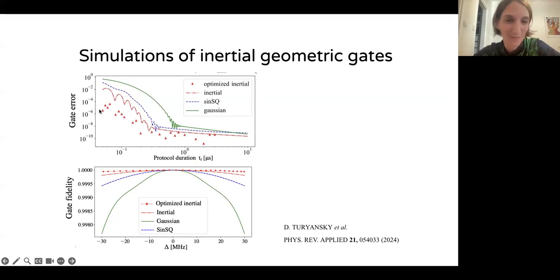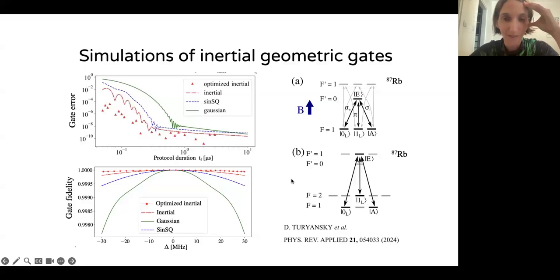I'll just show the results. What you see here in this upper plot is that we can achieve a lower gate error for the same protocol duration. Our inertial protocol is this red curve and we compare it to some standard adiabatic pulses. Then we can further improve this result with optimal control. What we see in the lower plot is that our results are also robust. We perturb the laser frequencies from atomic resonance and we check by how much the fidelity, the gate fidelity degrades. We see that our red pulses, the gate fidelity remains pretty high, even if we detune the frequency by 30 megahertz from the optimal point.